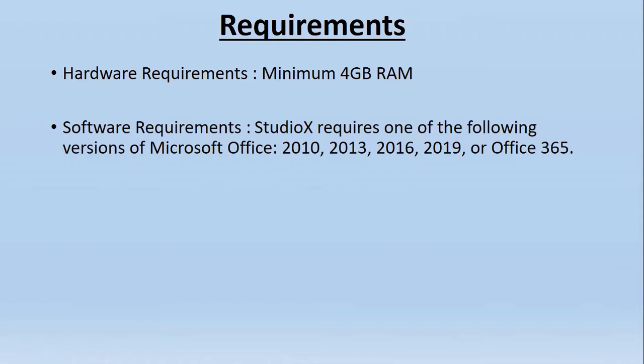To become a citizen developer, you need to have Studio X installed on your machine. Studio X is the tool you use as a citizen developer to automate mundane tasks. The minimum requirement is 4 GB RAM, and Studio X requires one of the following versions of Microsoft Office: 2010, 2013, 2016, 2019, or Office 365. These hardware and software requirements are pretty basic and should not be a struggle to fulfill.